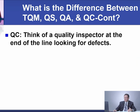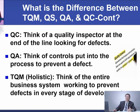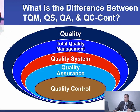To summarize: think of QC as a quality inspector at the end of the line looking for defects. Think of quality assurance as controls put into process to prevent any defect. Think of total quality management holistically — the entire business system working to prevent defects at every stage. Quality control is the smallest element of quality. Quality assurance is next, then quality system, then total quality management, which includes quality system, quality assurance, and quality control.